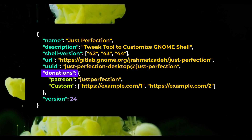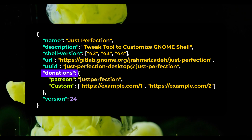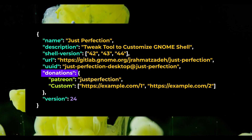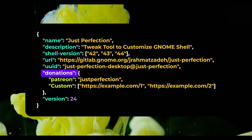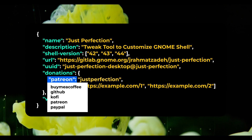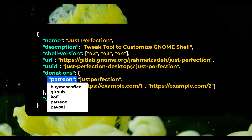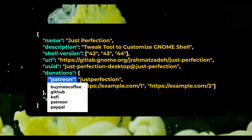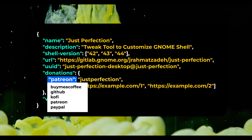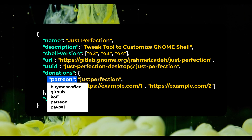We have a new donations key in metadata.json. Donations is an object with these possible keys: BuyMeACoffee, Github, Ko-fi, Patreon, and Paypal.